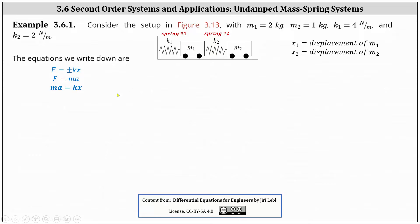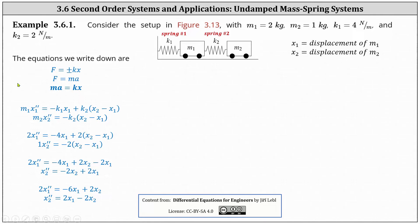Let's begin by considering mass one. For the first equation on the left, we have mass one times the acceleration of mass one given by x one double prime. This is equal to the sum of the forces of the springs acting on mass one. For spring one, as mass one moves to the right, spring one is stretched, and therefore the force will pull it back to the left, resulting in a negative force. So the force applied to mass one from spring one equals negative k one times x one, where k one is the spring constant and x one, the displacement of mass one, is the same as how much the spring is stretched.